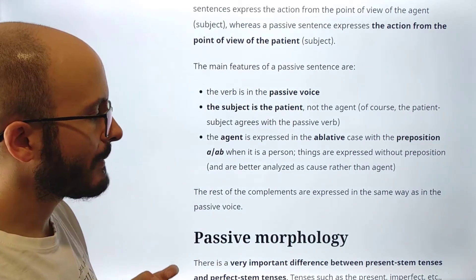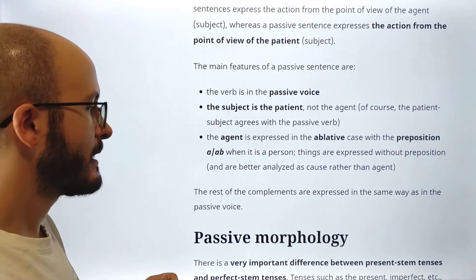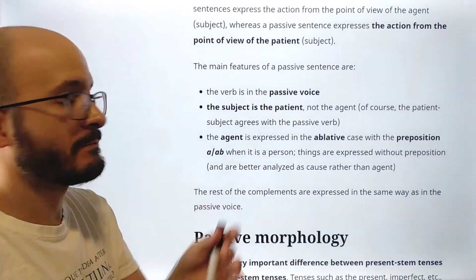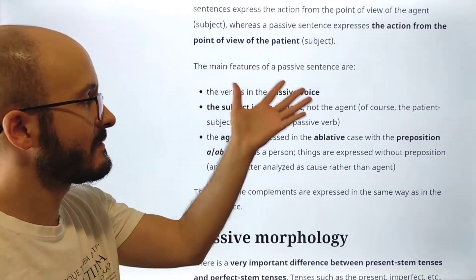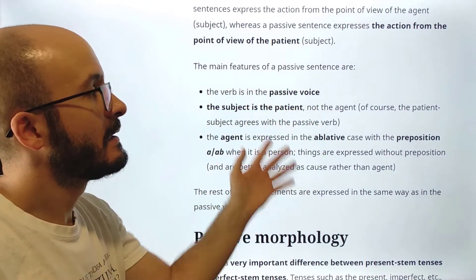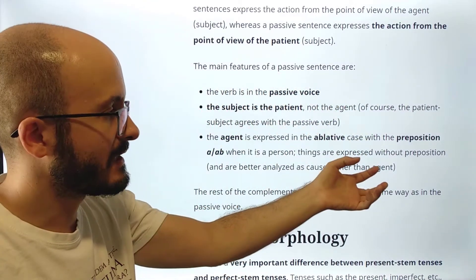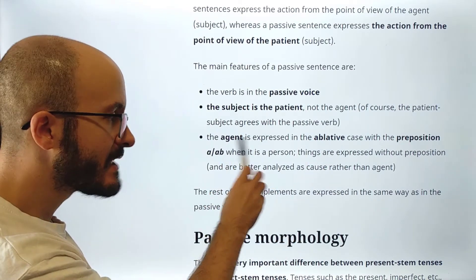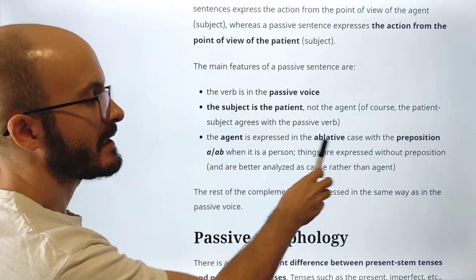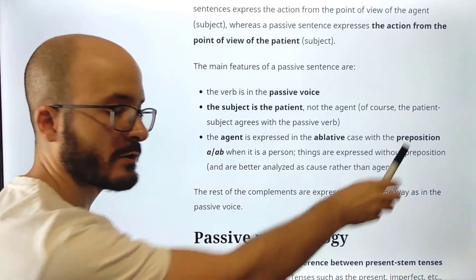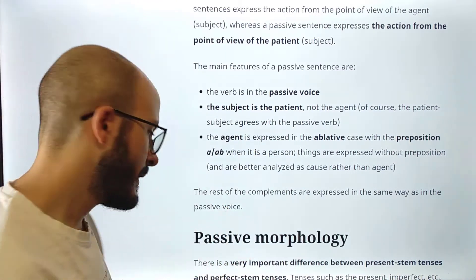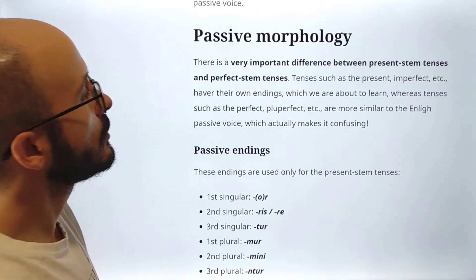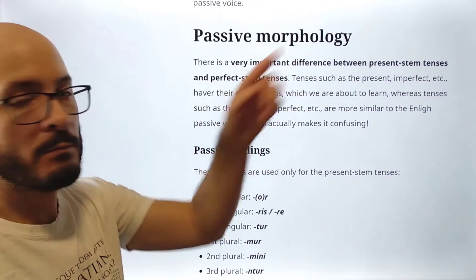The rest of the complements are expressed in the same way as in the active voice. That's pretty much it — those are the only differences between the active and the passive. The most important one being that the agent is in the ablative case with the preposition when it is a person. Now let's go to the passive morphology.